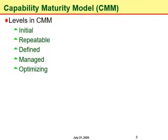The fourth level is managed. At this level, an organization monitors and controls its processes through data collection and analysis. The last level is optimizing. At this level, the processes are constantly being improved through monitoring feedback from current processes and introducing innovative processes to better serve the organization's particular needs.